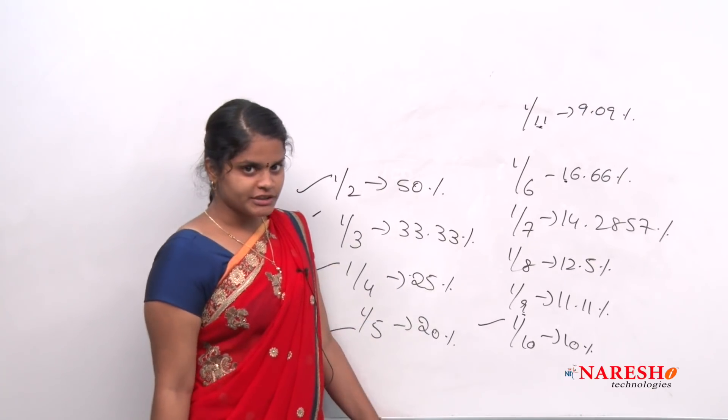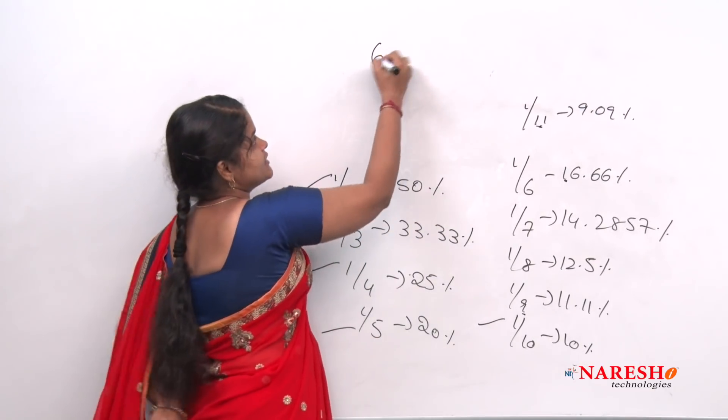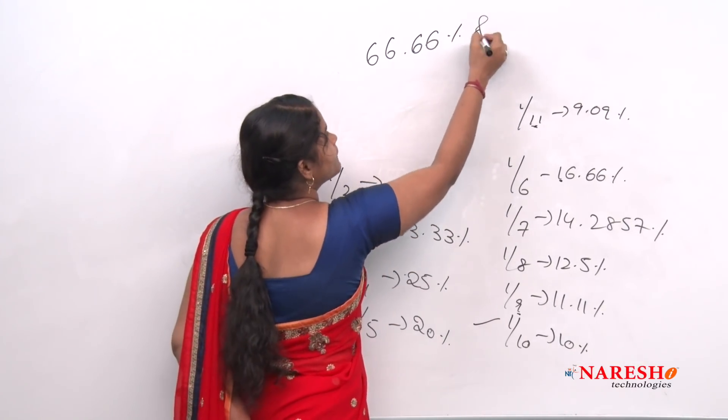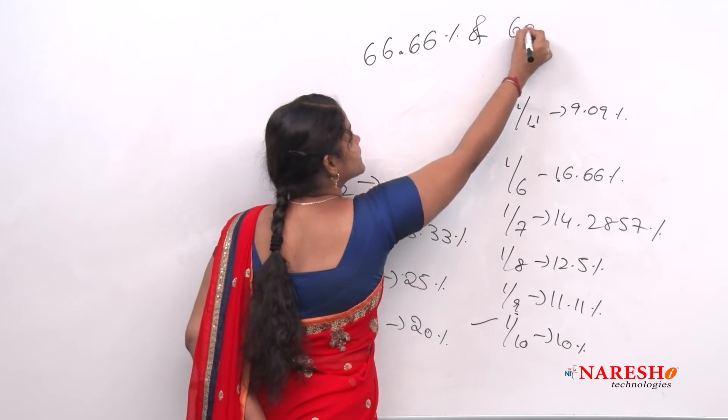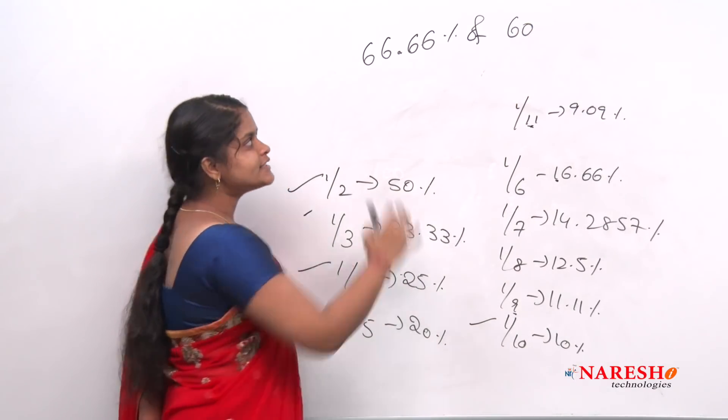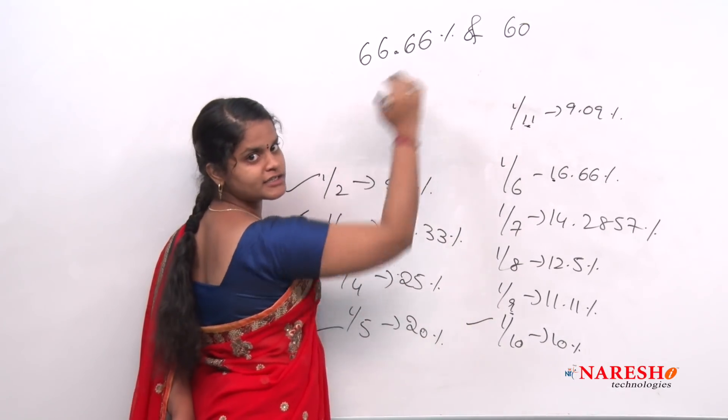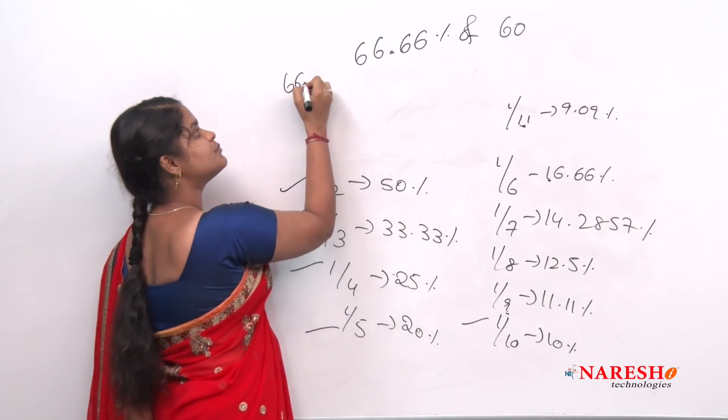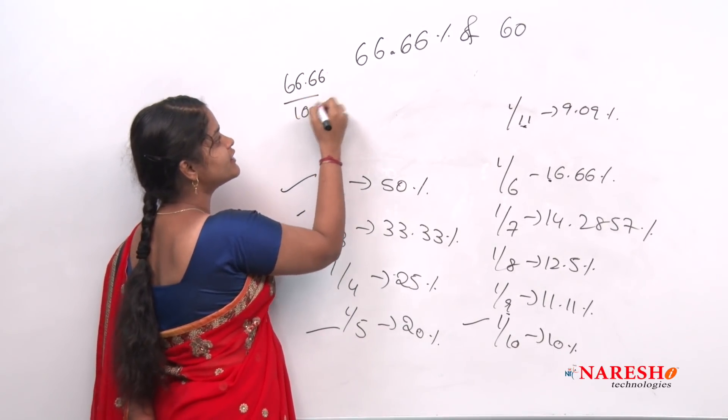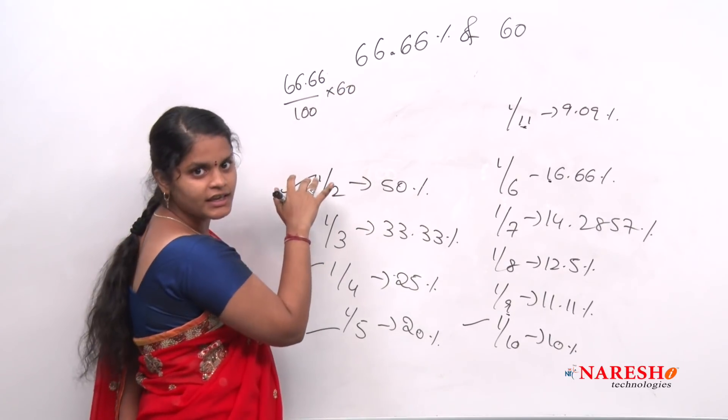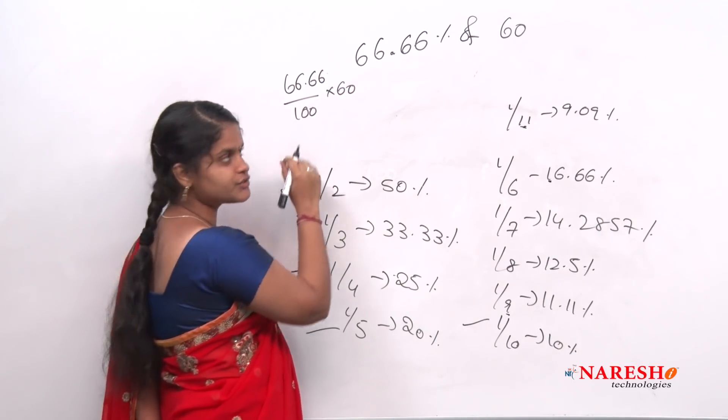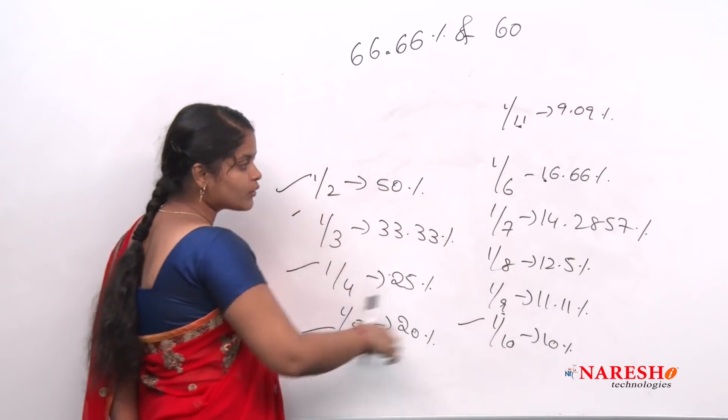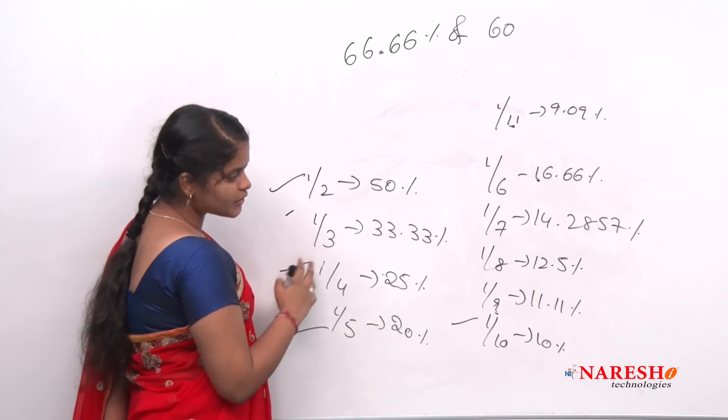Now if you remember these values, for example, there is a problem like 66.66 percentage of 60. How to solve? Basically, 66.66 by 100 into 60, right? So instead of this, what we are going to do is, see it is 66.66. How can I get 66.66 by using any of this?